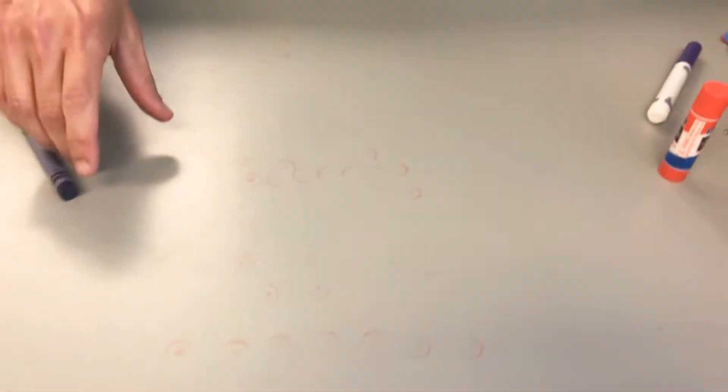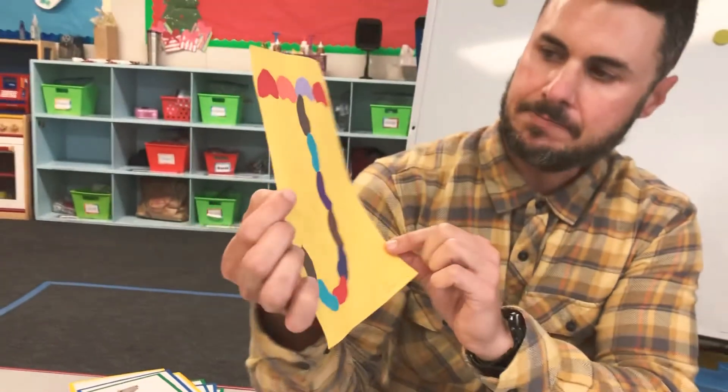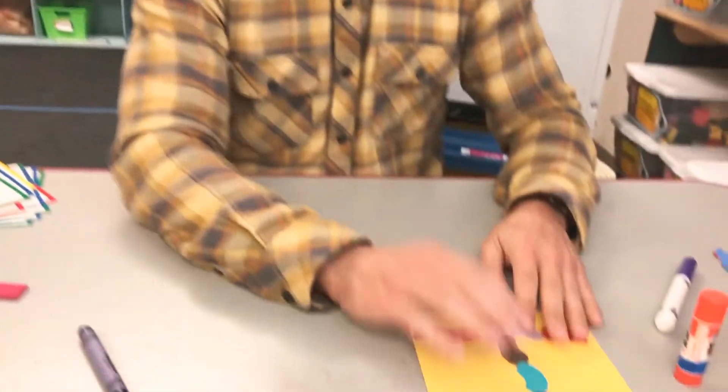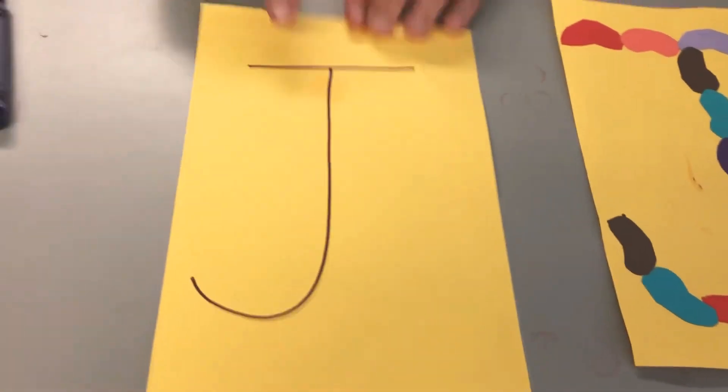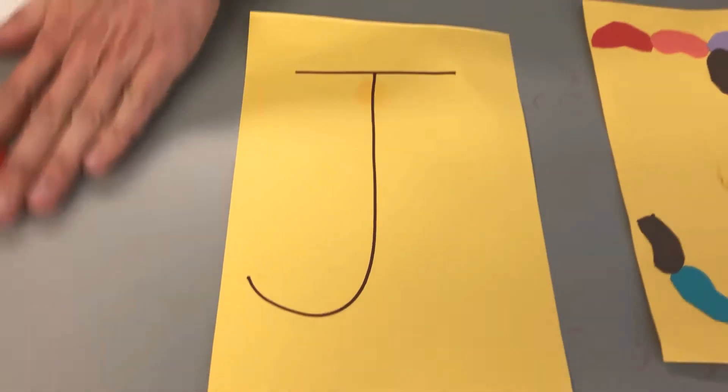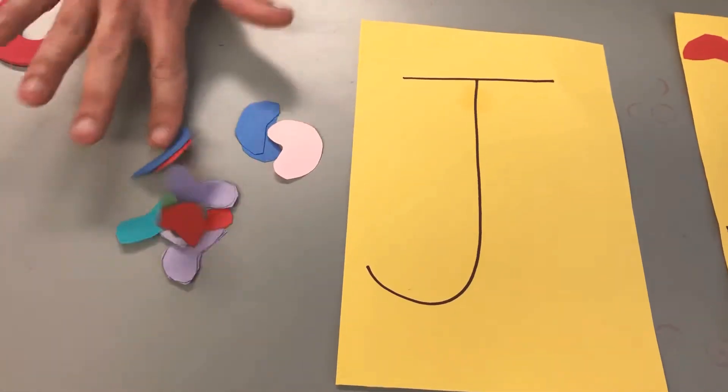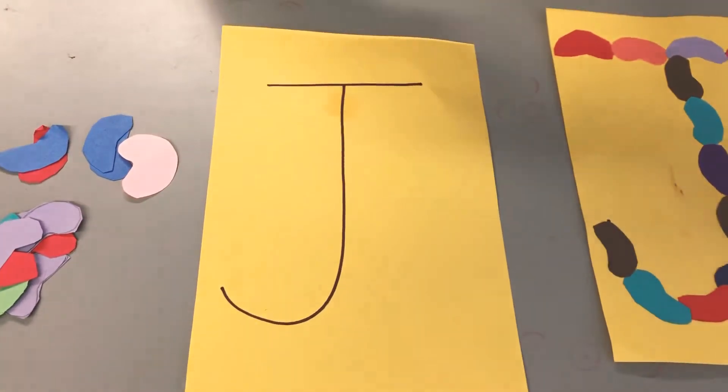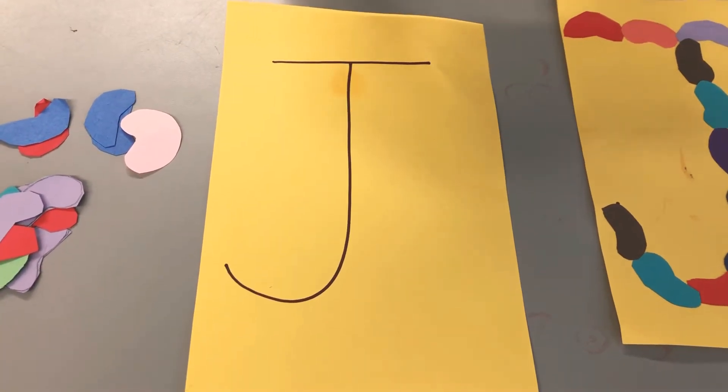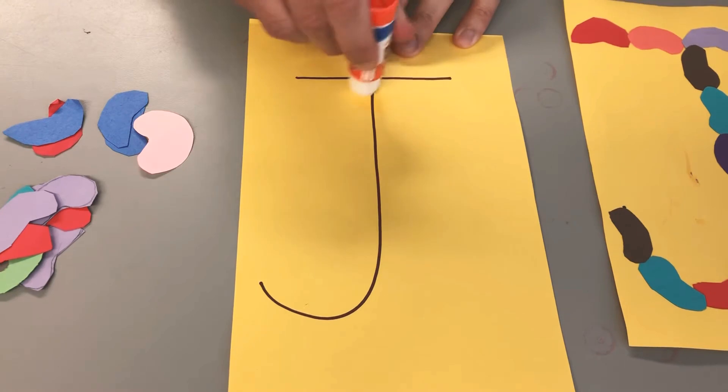And then the next thing we did today was we made a J for jelly bean. Okay, so I'm going to put that here. This was our sample. At home you have the letter J that we sent home like this. And then you should have a whole bunch of jelly beans to pick from. So you're going to take a glue stick, or if you have liquid glue, whatever you have, and we are going to start at the top and work our way down.